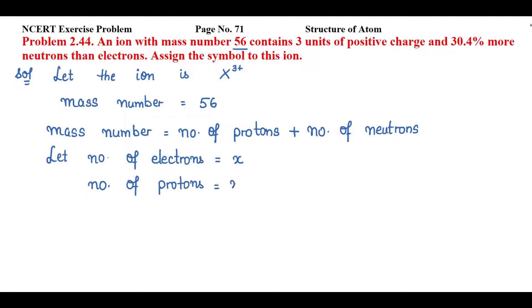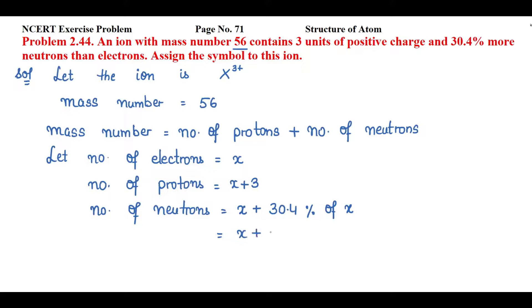Now, number of neutrons are 30.4 percent more than the electrons. So number of neutrons equals number of electrons plus 30.4 percent of electrons, which is x plus 30.4 divided by 100 times x, giving x plus 0.304x, which equals 1.304x.